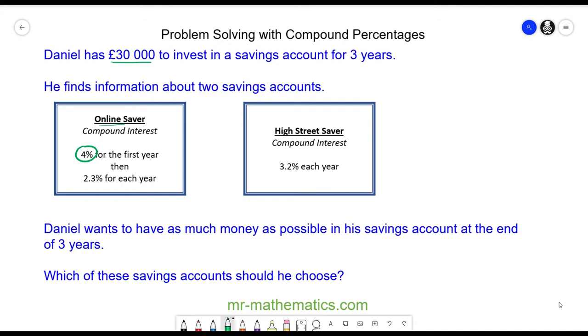As a multiplier this is 104%, which by dividing by 100 we get 1.04. This is in our first year, so we raise it to a power of one, which is 1.04.